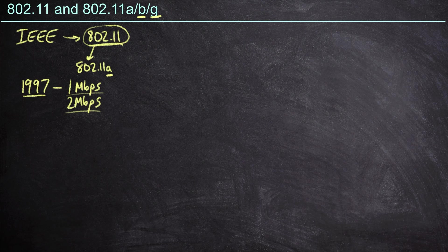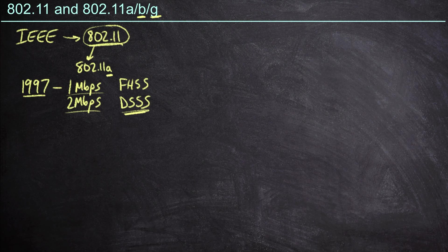We also used different types of spread spectrum technologies. We had frequency hopping spread spectrum and direct sequence spread spectrum. We're going to talk about these concepts in more detail later in this course, but understand that we don't actually use these techniques anymore. Within a couple of years, in 1999, we had a much better wireless protocol: 802.11a.